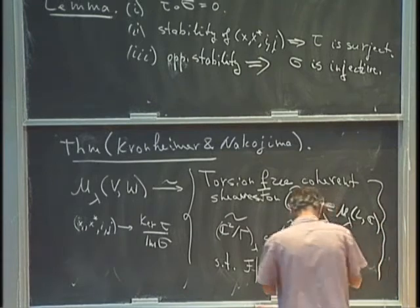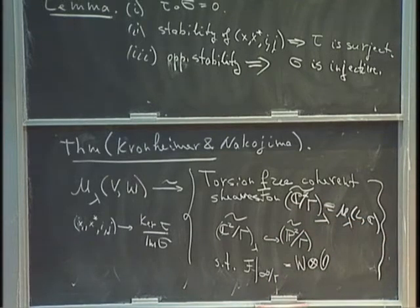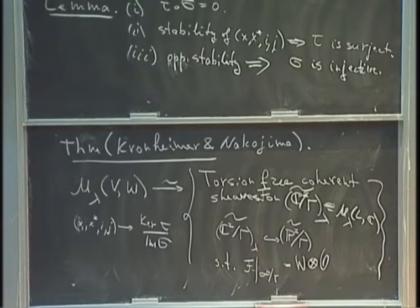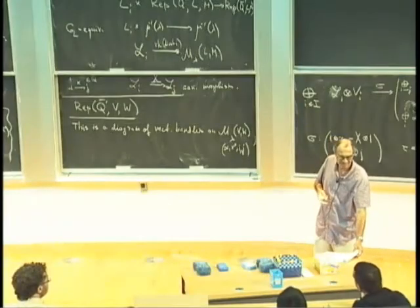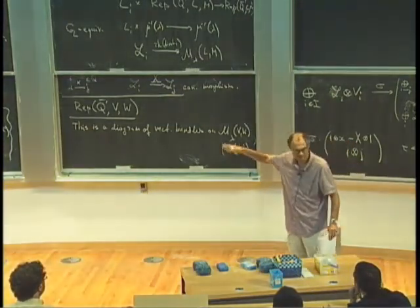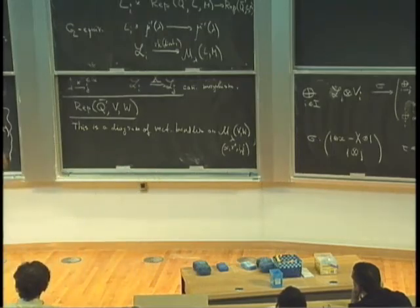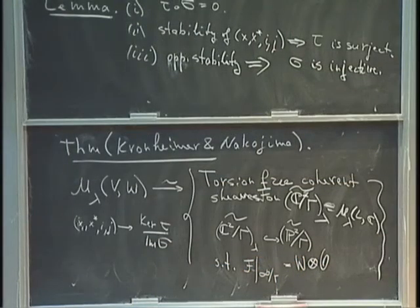V is computed in a complicated way as H¹ of some sheaf tensored with some power of O(something) — there's no simple formula for V. W is very simple: it's just the fiber at infinity. But V is something complicated.